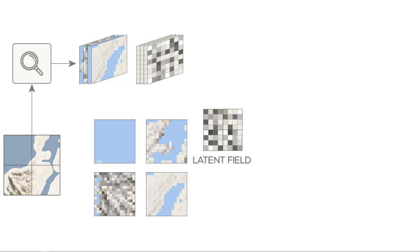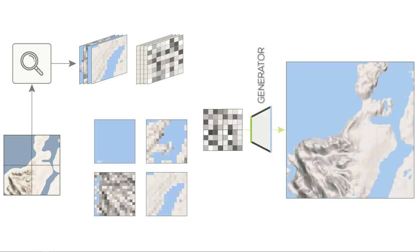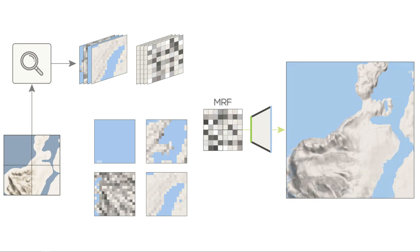The latent field is processed by the second generator stage, yielding the output texture. An MRF formulation can be applied to the latent field to improve the coherence.